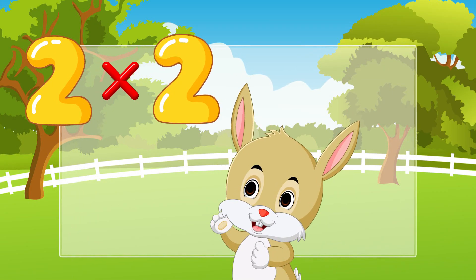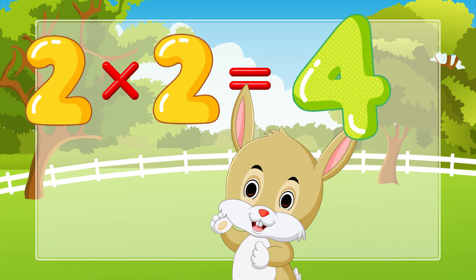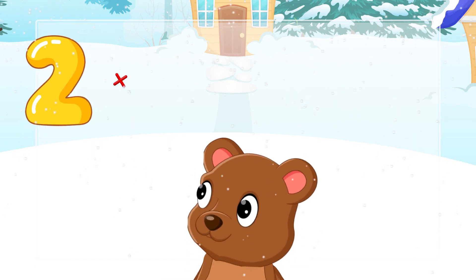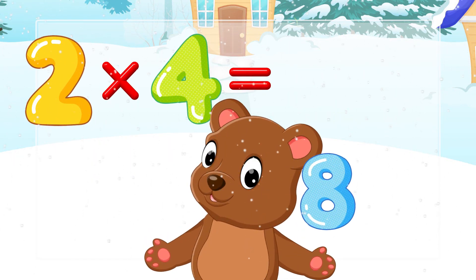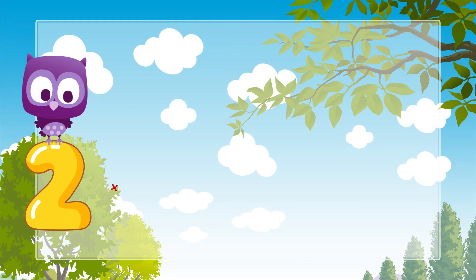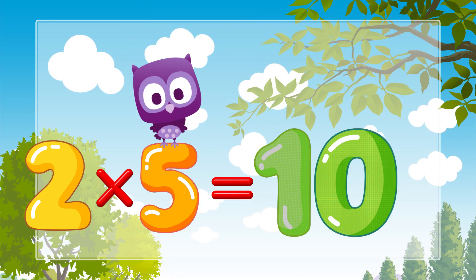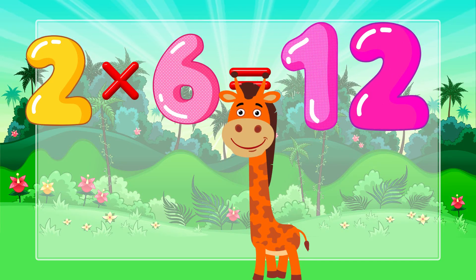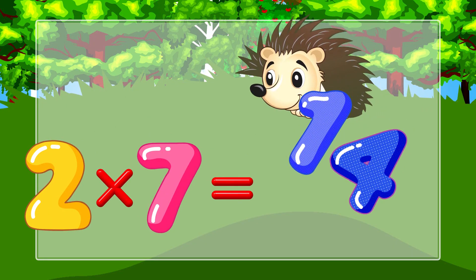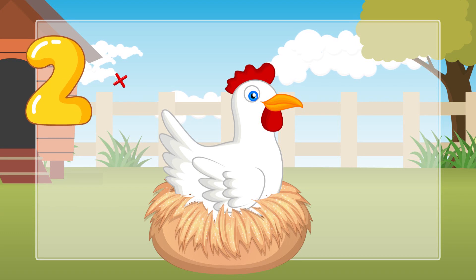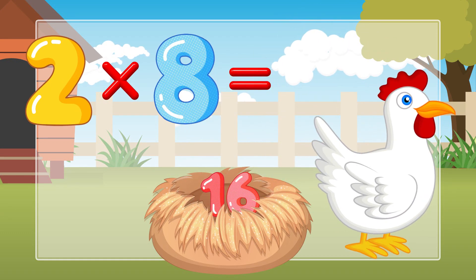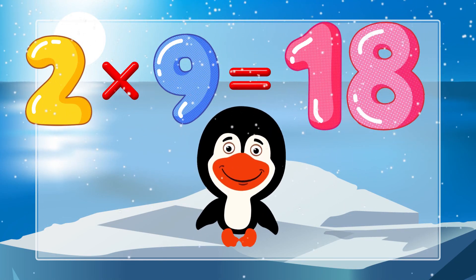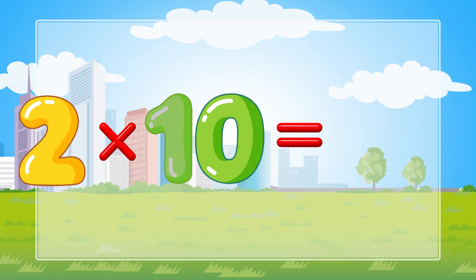Two times two is four. Two times three is six. Two times four is eight. Two times five is ten. Two times six is twelve. Two times seven is fourteen. Two times eight is sixteen. Two times nine is eighteen. Two times ten is twenty.